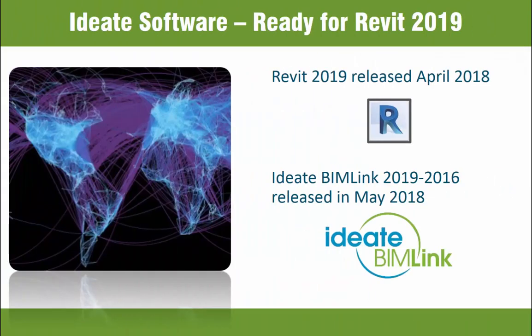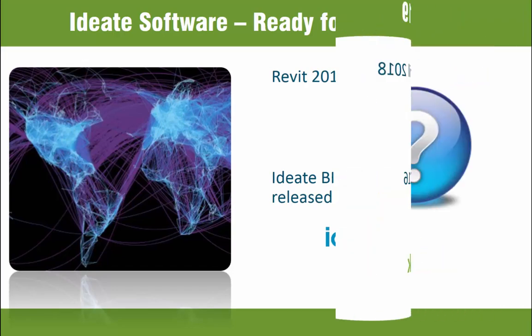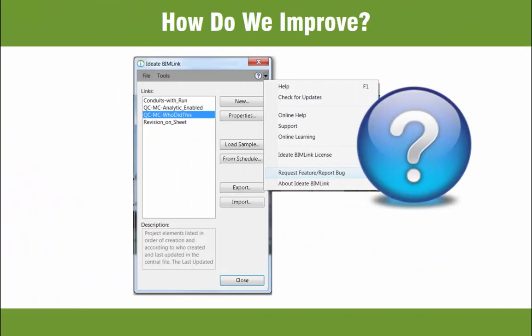Revit version 2019 became publicly available in April of 2018, and in May of 2018 ID8 Software released new versions of ID8 BIMLINK. Before we cover the rest of our ID8 BIMLINK improvements, I want to thank all those who help us improve. Much of the work we're about to review is a direct result of your feedback, so thank you.